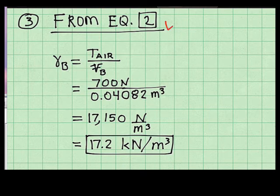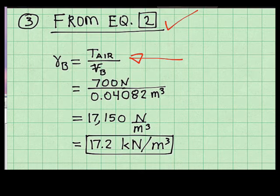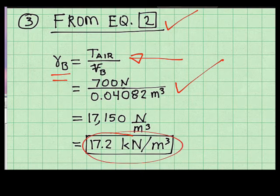Step three, I applied equation two, which is here, to solve for the specific weight of the block material. And I put numbers in. And I came up with this as my final answer. So the specific weight of the block material is 17.2 kilonewtons for every cubic meter of volume.